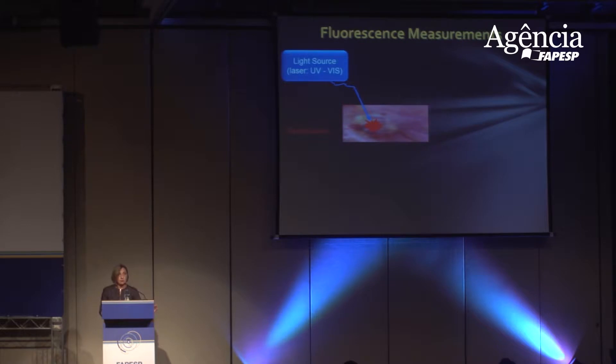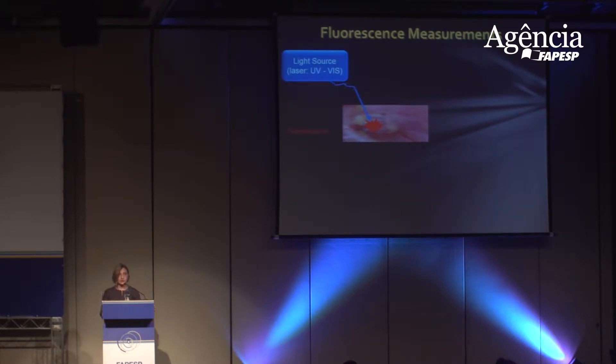We propose to use a technique based on fluorescence lifetime measurements which can simplify this process and be adjunct to the current way of assessing and evaluating tissues, but this time using light to probe tissue. In principle we can have a light source that emits in the UV or visible range. You direct this light to tissue and certain molecules in tissue have the property of absorbing this light and re-emitting light. This is called fluorescence.